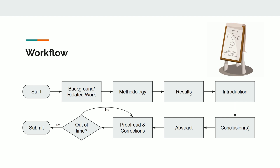First you will do literature review or background research and then start writing, because if you wait till the end of the project to start writing it will be really hectic and you probably won't produce the best report possible. So you should start writing the report in parallel with your project. Once you are done with methodology and have your results, you can then start writing your introduction.